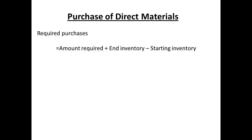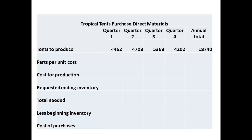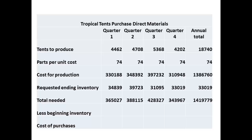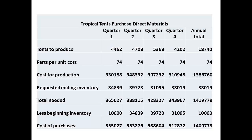Now that we have figures for the number of tents to be produced each quarter, we can determine the direct materials that are required for each quarter. We start by entering the number of tents to be produced onto the spreadsheet, then enter the cost of the parts and materials for each tent. Multiplying the number of units by the cost per unit gives us the production cost. However, just as we had an inventory of completed tents, the production department will always want to maintain inventory of parts. This figure has been set as 10% of the production for the following quarter. The figure for the first quarter is that from the previous period. We then subtract the inventory at the start of each quarter, so that we now have a figure for the cost of purchasing direct materials for each quarter.